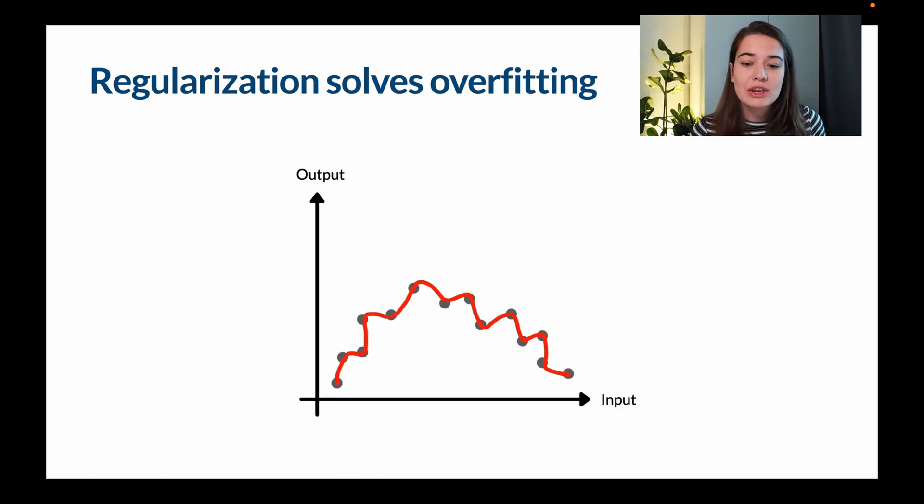Overfitting is when your model really closely fits the training data so much so that it is not able to generalize really well to the real world. So if you look at this example, if we have only one input and we have only one output, an overfitted model would look something like this.